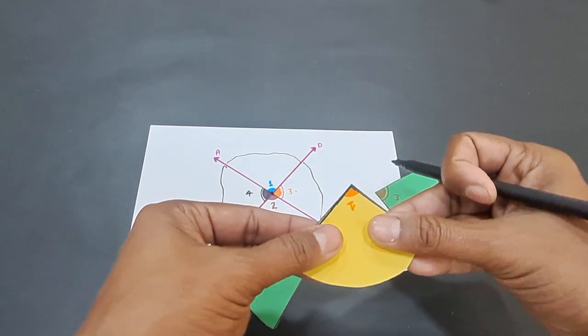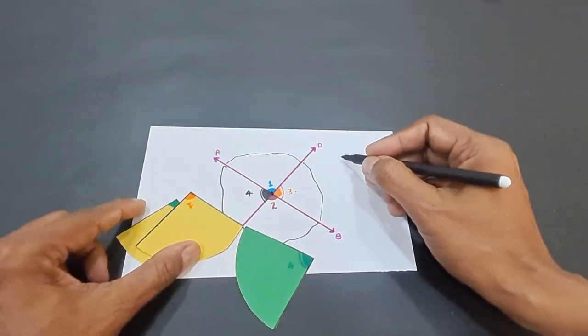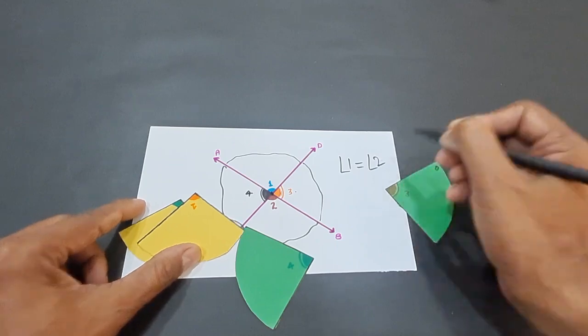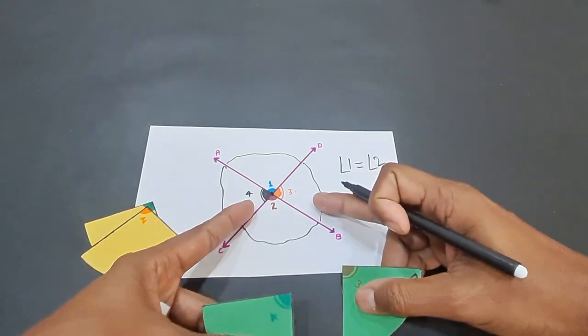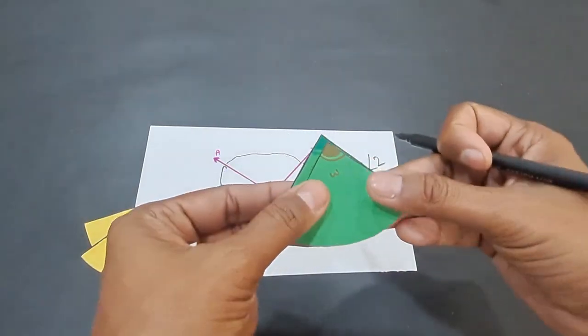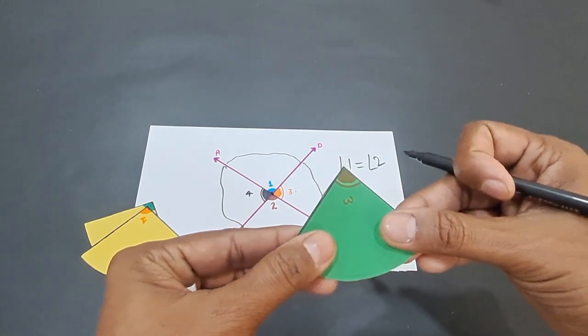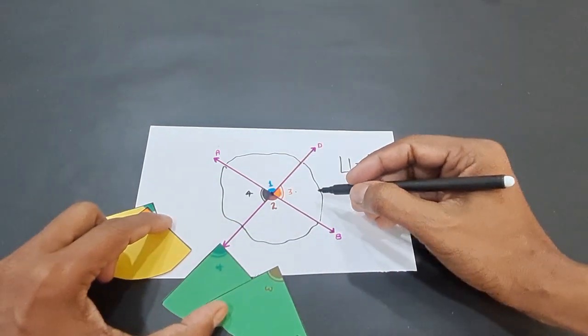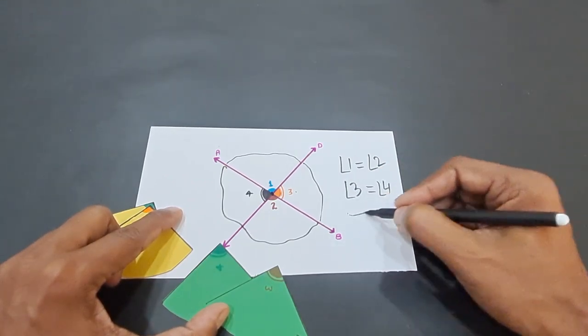They exactly overlap, thereby proving that angle 1 and angle 2 are both equal. Likewise, the other pair of vertically opposite angles, that is angle 3 and angle 4 - if you place them one over the other like this, they will exactly overlap, thereby proving that this pair of vertically opposite angles are also equal.